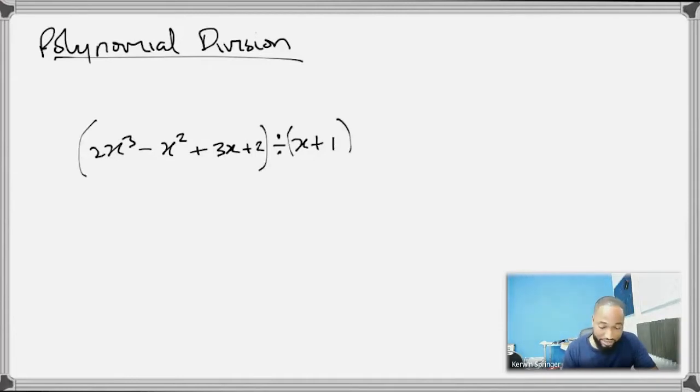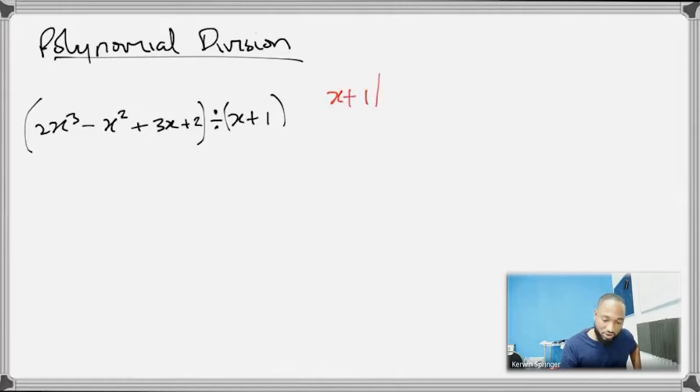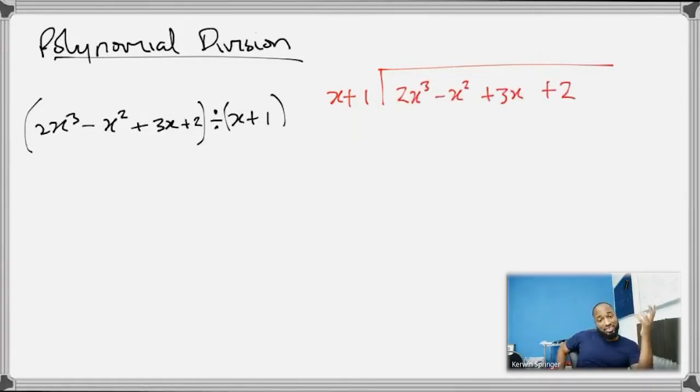But there are letters involved, right? So you are actually dividing one polynomial by another polynomial. If you have this scenario, let's say x + 1, and you want that to be divided into 2x³ - x² + 3x + 2. How do you begin? You set up your long division and we have 2x³ - x² + 3x + 2.